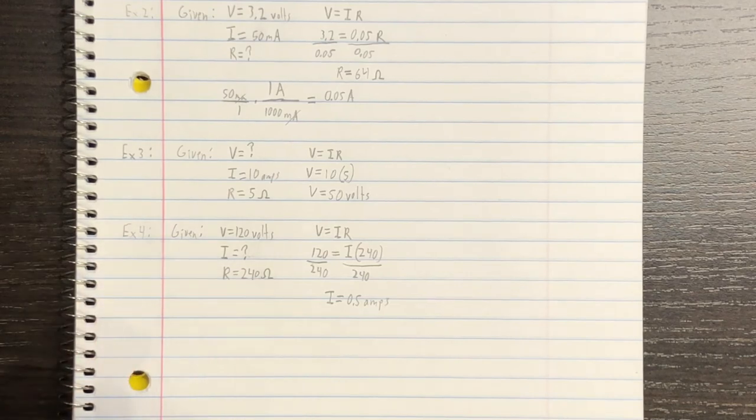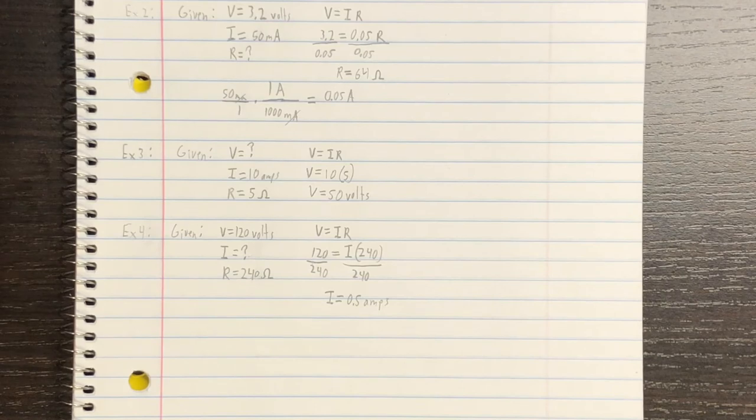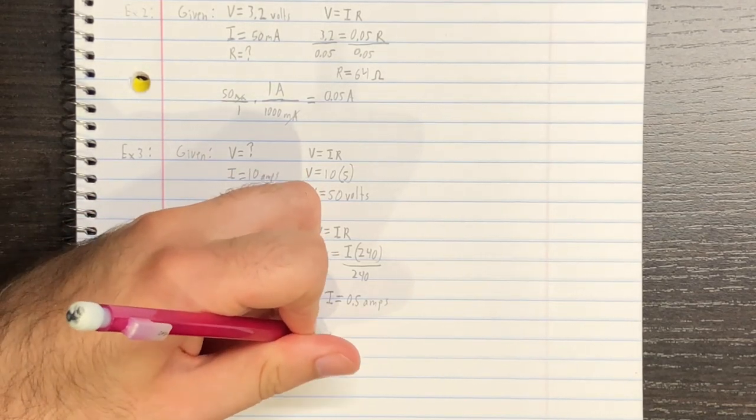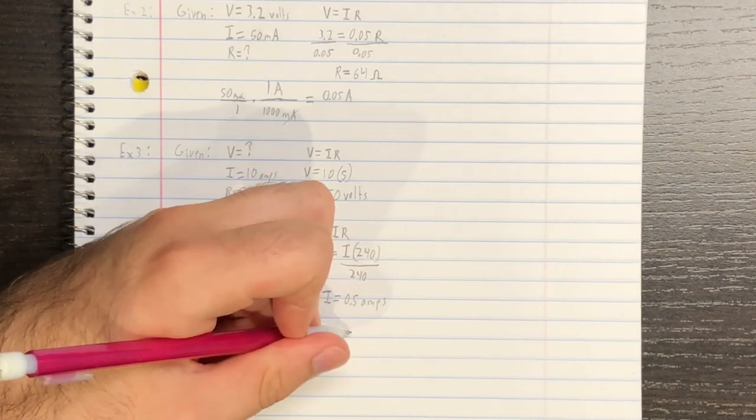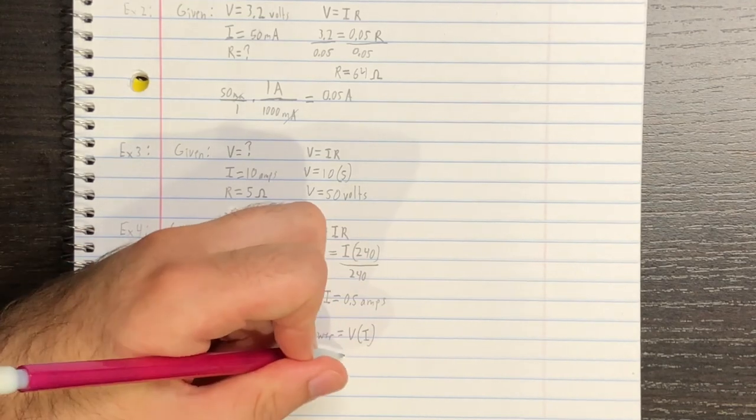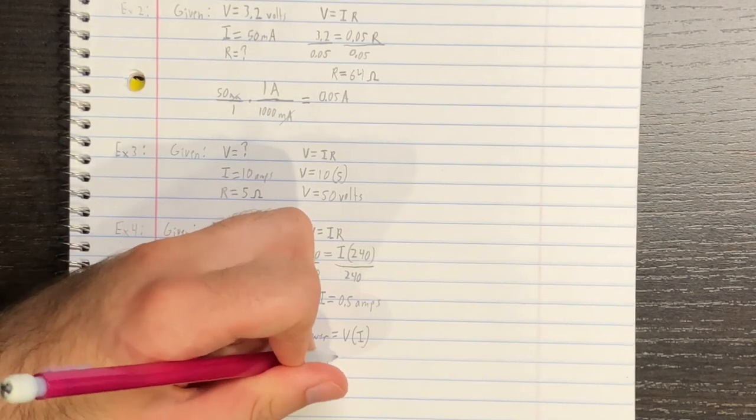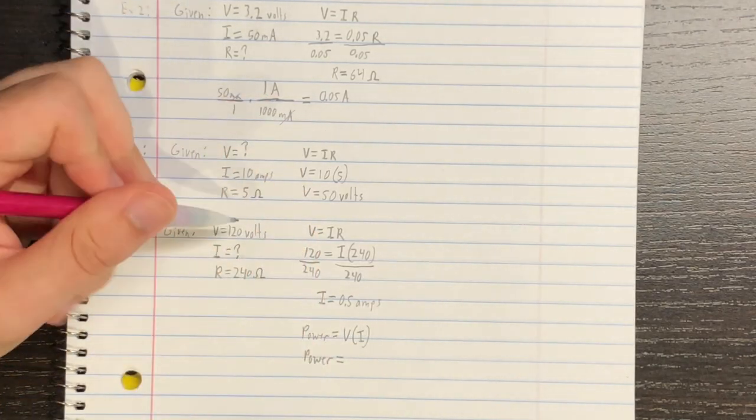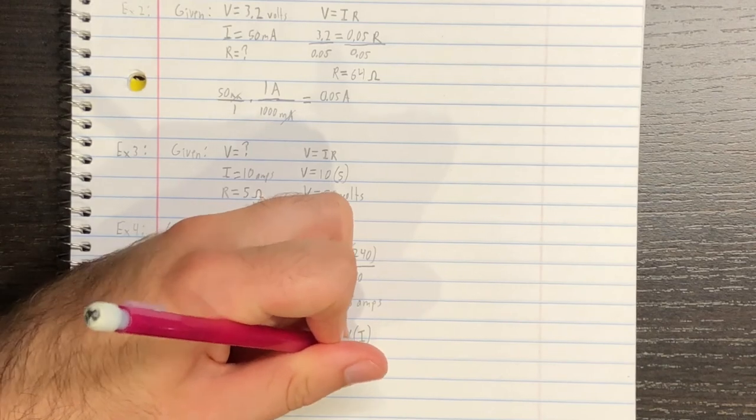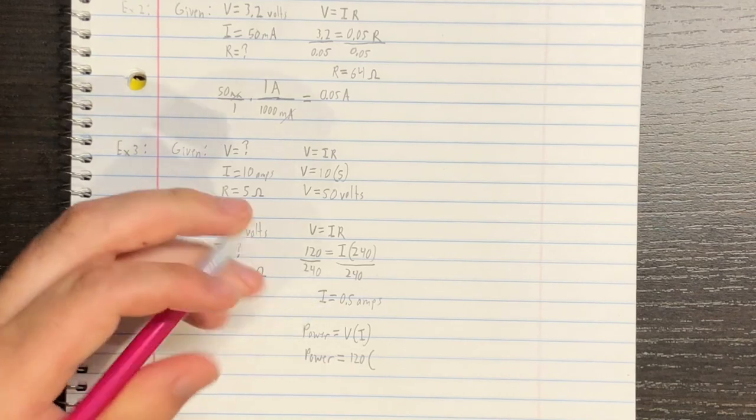And while we haven't gone over it yet, power is actually equal to the voltage times the amperage. So, power equals volts times amps, right here. So, we're going to start filling in these variables with our known information. We have a known voltage of 120 volts the bulb is supposed to operate at. And there's an amperage that can pass through the bulb at that voltage of 0.5 amps.